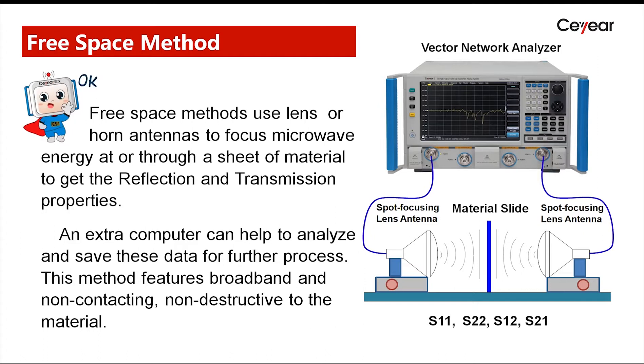This method uses lens or horn antennas to focus microwave energy at or through a sheet of material to get the reflection and transmission properties.